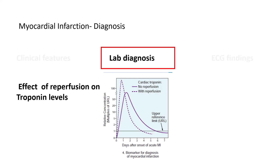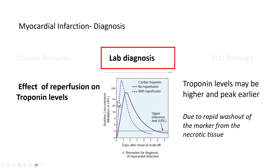If the ischemic myocardium is reperfused, there is an effect on troponin levels. The dotted line in the illustration shows the effect of reperfusion: the troponin peak is higher and occurs earlier. This is because of very rapid washout of the marker from the necrotic tissue once the myocardium is reperfused.